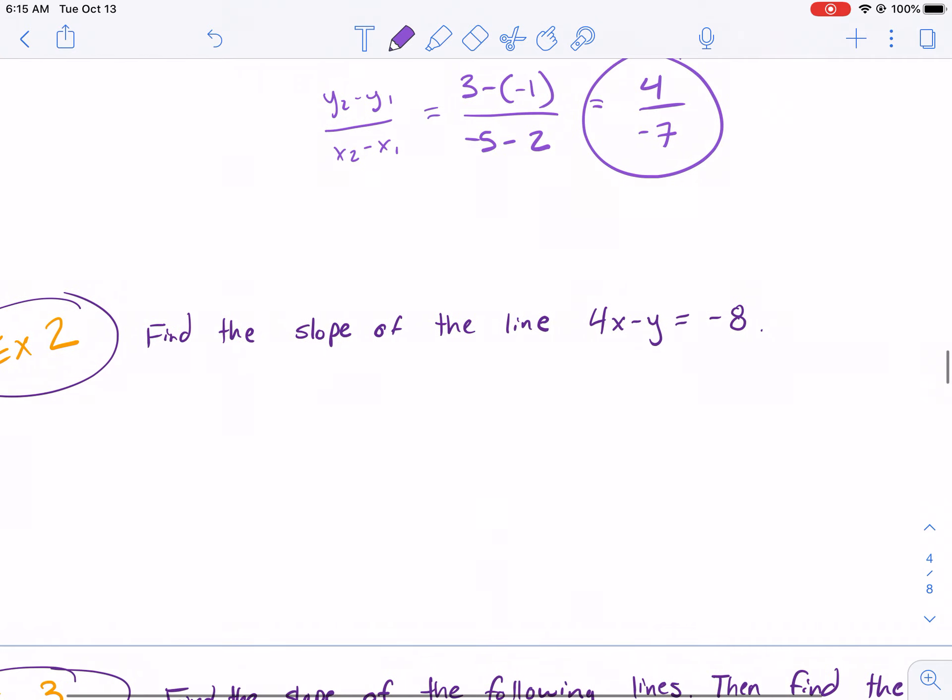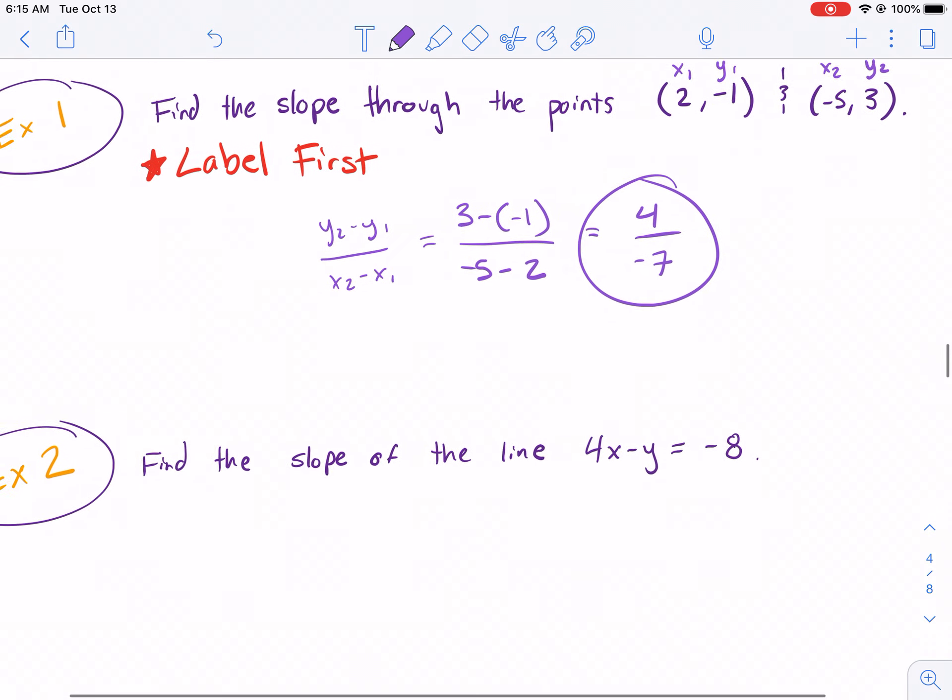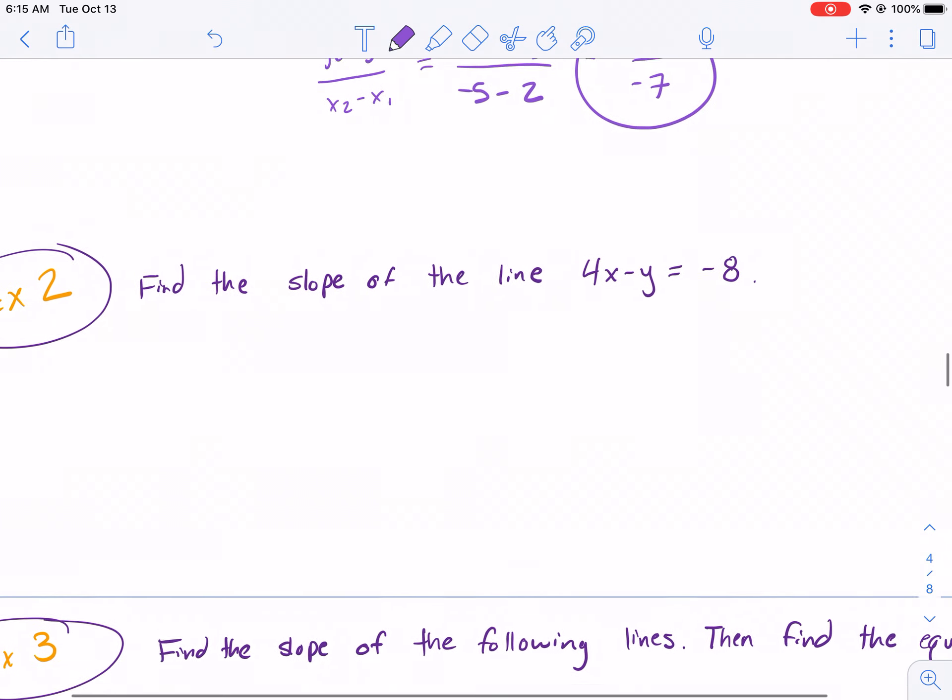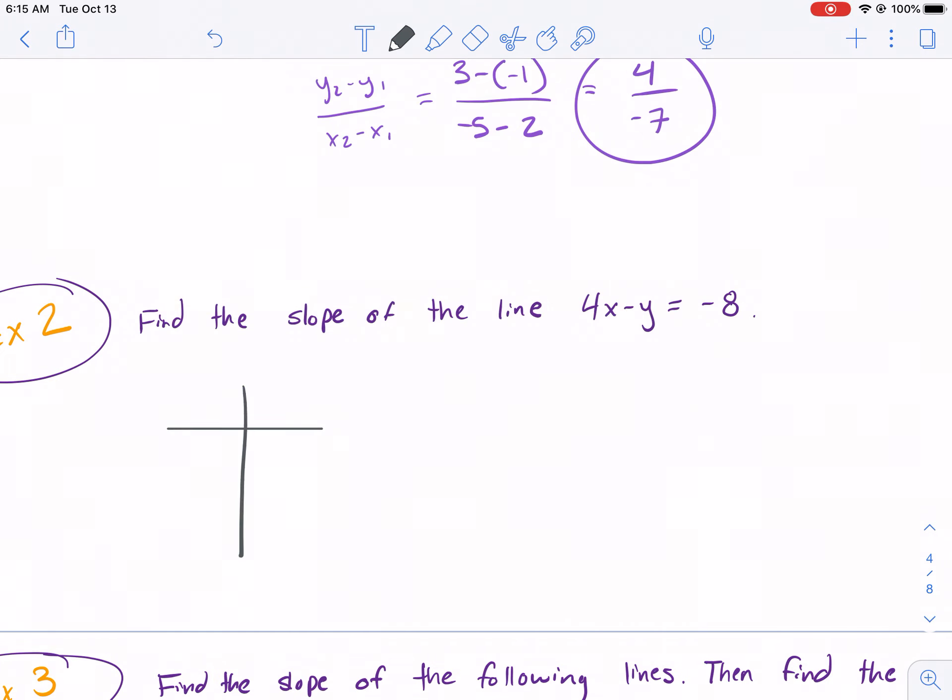Find the slope of the line 4X minus Y equals negative 8. I'm not sure if it wants us to plug in points. We could use a table here to find points. So, we're going to make our table. And we can plug in points here for X and then also for Y. So, for X, I'll plug in 0 and I'll see what we get. Once you plug in 0 for X, you get negative Y equals negative 8. That means Y is going to equal 8. So, (0, 8). And I could plug in 0 for Y and see what I get for X. So I plug in 0 for Y, I get 4X equals negative 8. And I get X equals negative 2.